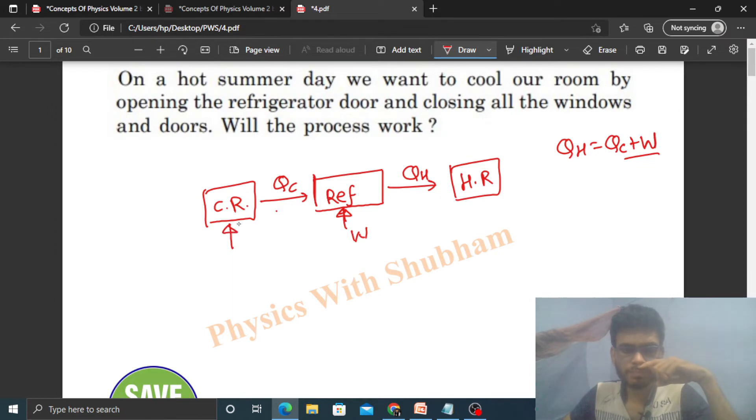The cold reservoir is the space inside the fridge - the space that remains cold inside the fridge. The hot reservoir is the room in which the refrigerator is kept - whichever room it's kept in, or the kitchen - that is your hot reservoir.